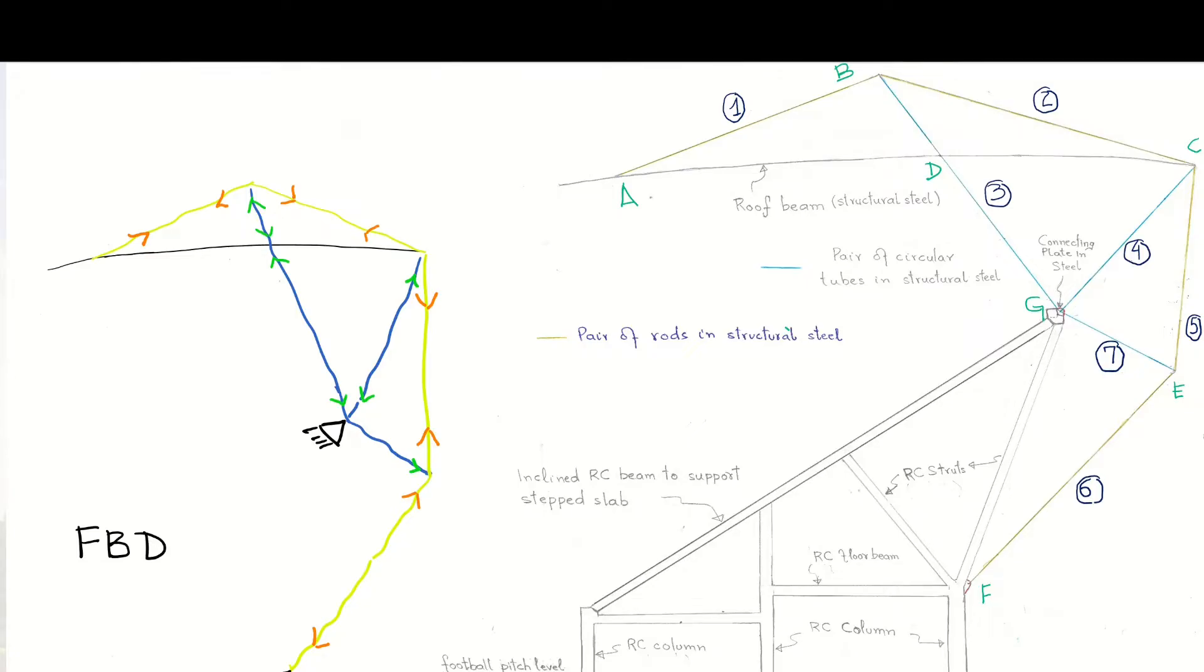We have two members BD and DG. Compression members are in pair of circular tubular cross-sections while tension members are comprised of a pair of rods. At points F and G, RC members collect the load and transfer them to the foundation. Spectator load is transferred to the RC columns and RC slabs through the inclined RC beam. These RC columns transfer the loads to the foundation. For the spectators, the distribution of loads is pretty straightforward.